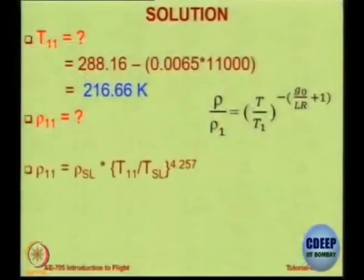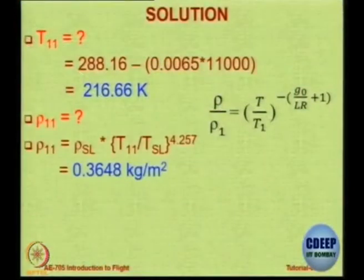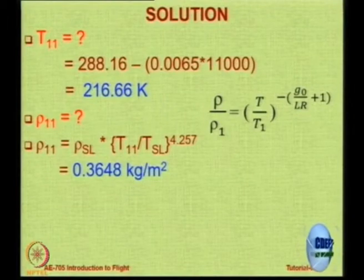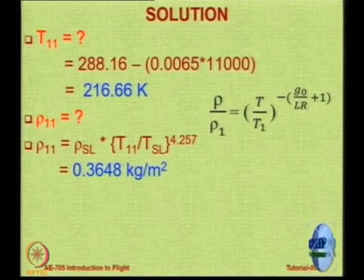Please calculate now. T11 is 216.66, TSL is 288.16. Find the ratio and multiply by sea-level density of 1.2256 kg/m³. The density at 11 kilometers comes out to be 0.3648 kg/m³.